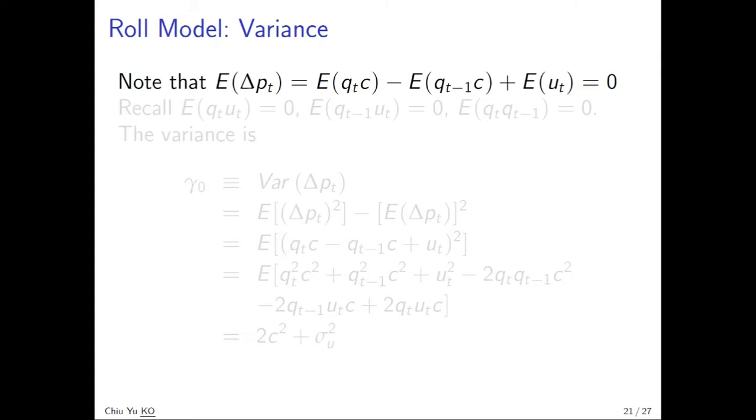And we call that from the three assumptions we have: Q_t, u_t have mean zero, Q_t, u_{t-1} times u_t also mean zero, and due to the independence, Q_t times Q_{t-1} is also zero.